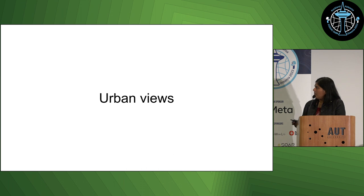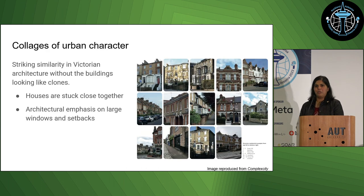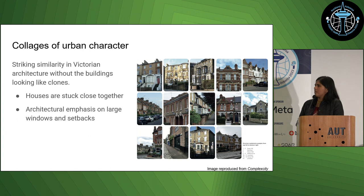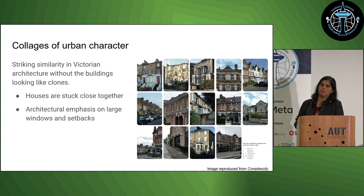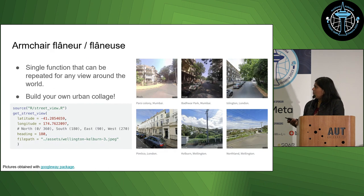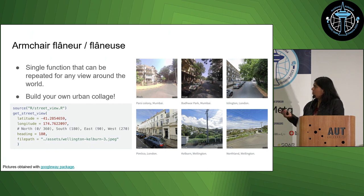We'll start off with urban views. If you are just a beginning urbanist, interested in the cities you live in or have visited, one of the first nicest things is to take photos and put together a collage. What are the similarities in features you really like — be it architectural features, like Victorian architecture around London, or landscapes or green spaces? You can construct a really nice narrative about what you see and what you potentially don't see. And you can still access photographs of a city you're not in and build your own collage — you can just be an armchair flaneur or flaneuse.